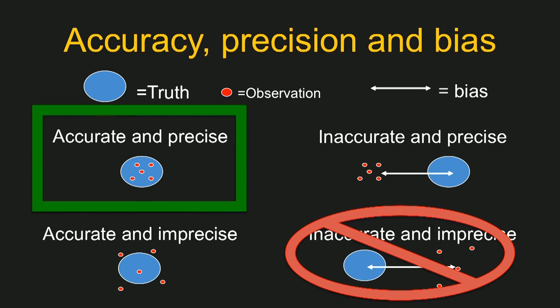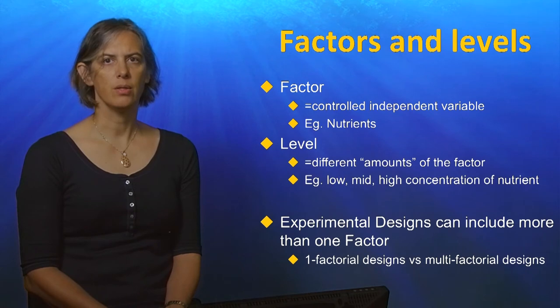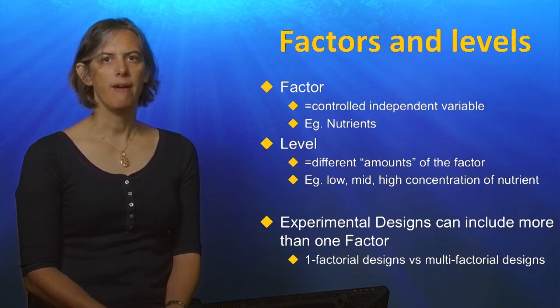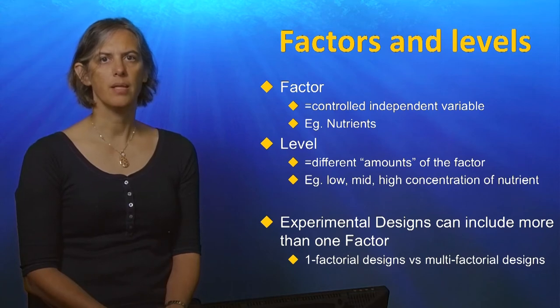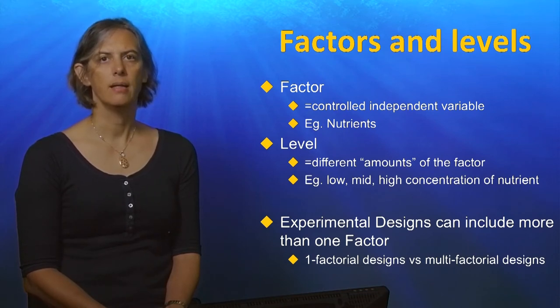A step essential to this goal is to ensure that background conditions are uniform across all the treatments supplied to all the experimental subjects. Talk of treatment requires the introduction of a few more technical terms. A factor is essentially a category or type of treatment, sometimes referred to as controlled independent variables or categorical variables. Here, the application or presence of nutrients is given as an example of a factor.